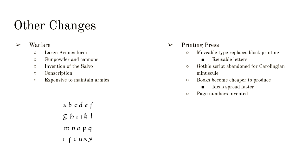Two other changes happened. There was a change in warfare — large armies became really expensive to maintain. Gunpowder and cannons came into use, and instead of everybody shooting at once, they fired in rounds or salvos. Drafts and conscription also started. In some cases armies were so big and expensive they weren't even used — they were just for show. Then we also have the printing press, which sped up the way ideas were shared. Books became cheaper and faster to produce. The idea of page numbers was introduced so that everybody could literally be on the same page when discussing an idea.